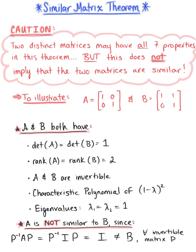But that's not equal to matrix B for any invertible matrix P. So again, we want to be mindful that even when these properties hold true, it does not necessarily imply that the two distinct matrices are similar.